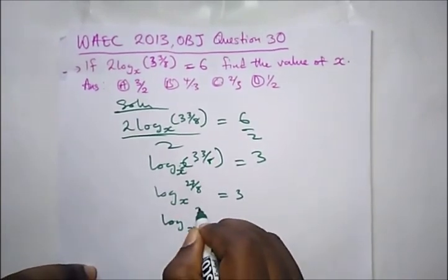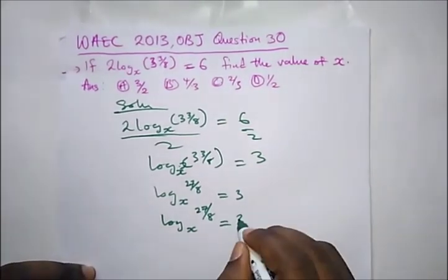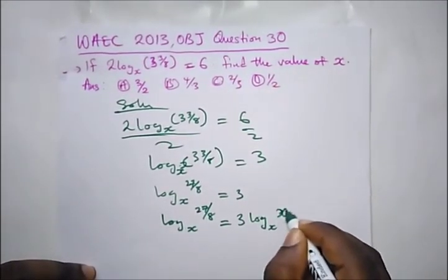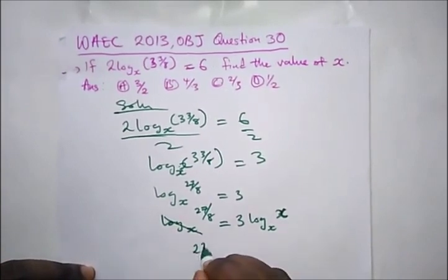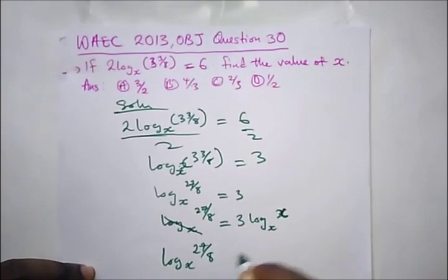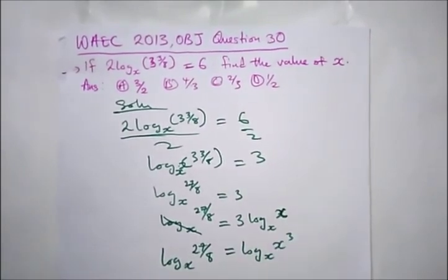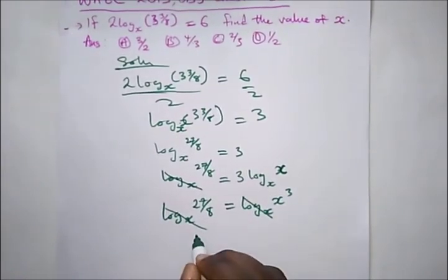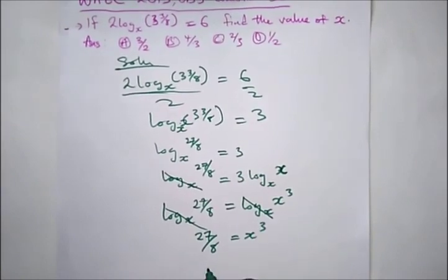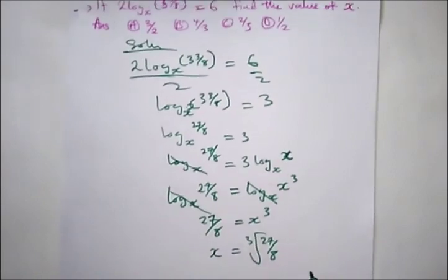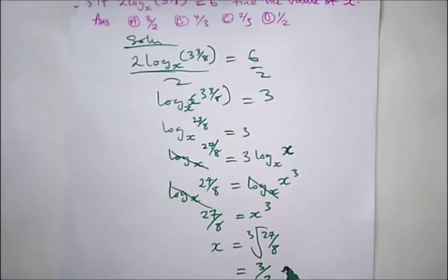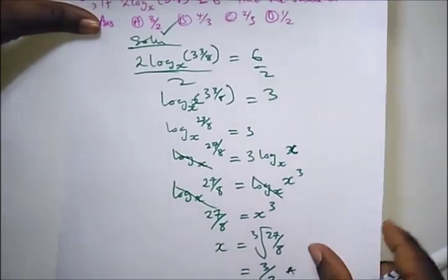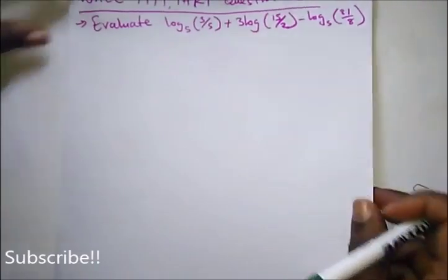From here, we raise x to the power of 3 on the right side: log_x(x^3) = 3, so the logs cancel and we get 27/8 = x^3. Therefore x = the cube root of 27/8. The cube root of 27 is 3 (since 3×3×3 = 27), and the cube root of 8 is 2. So x = 3/2, which is option A.